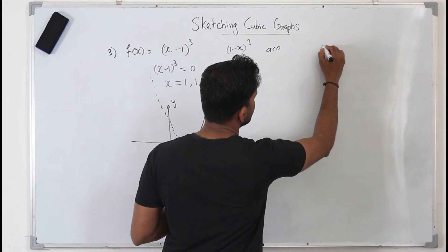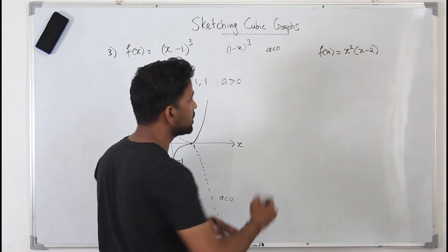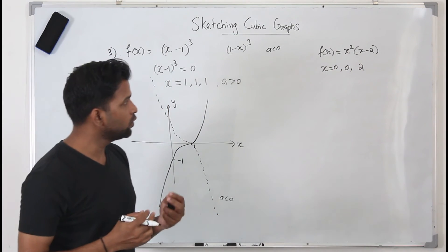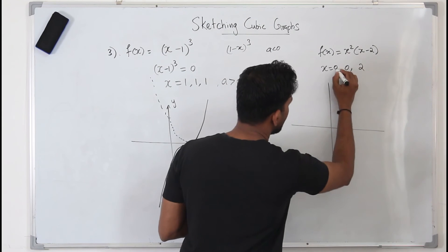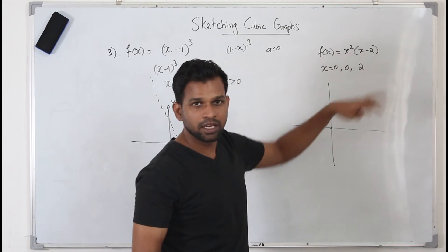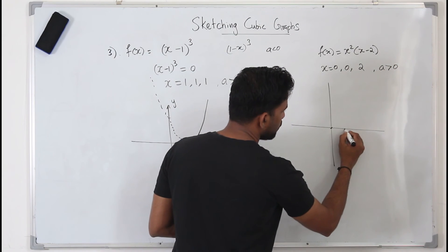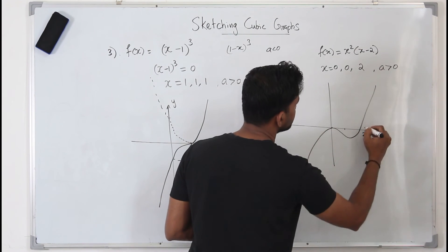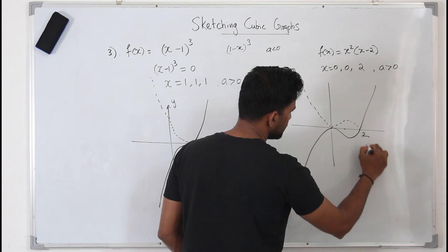Example 4: f(x) = x²(x−2). The roots are x = 0, 0, and 2 — two equal values at zero. The y-intercept: replacing x with 0 gives 0, so the y-intercept is also zero. The coefficient of x³ is positive. The graph touches the x-axis at x = 0 (repeated root) and passes through at x = 2. If a were less than zero, the graph would be the inverted form.